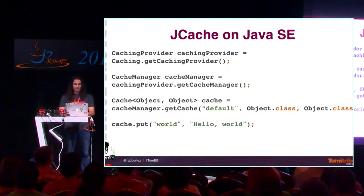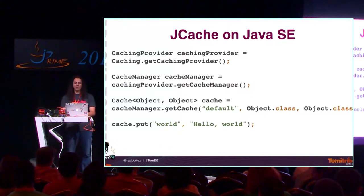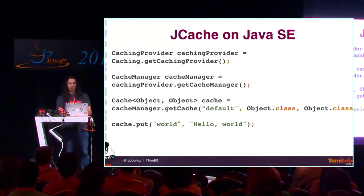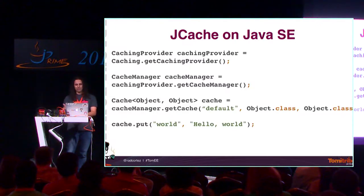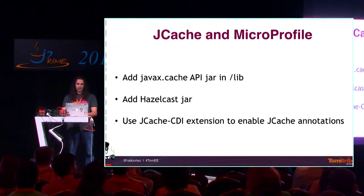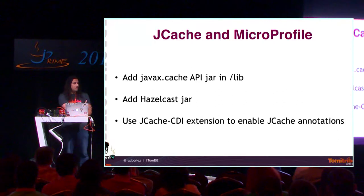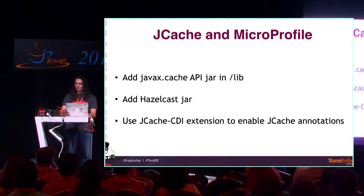To put an object into the cache: get the caching provider — this gets you the default one; if you want a specific one, indicate the fully-qualified name on the getCachingProvider method. Then get the cache manager, get the cache using Cache<Object, Object> — it could be String/String or whatever types you want — then just do a put and a get. It works exactly like a map. For JCache and MicroProfile, binding them together is easy: add a Hazelcast implementation JAR and a CDI extension to map JCache into your project.